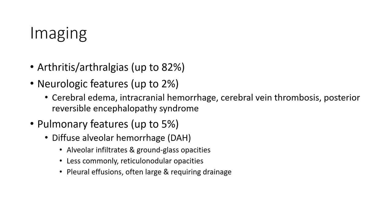Arthritis and arthralgias are seen in up to 82%. Neurologic features occur in up to 2%, including cerebral edema, subdural hemorrhage, cerebral venous thrombosis, and posterior reversible encephalopathy syndrome (PRES). Pulmonary features are seen in up to 25%, including diffuse alveolar hemorrhage, ground-glass opacity, alveolar infiltrates, and less commonly reticulonodular opacities.